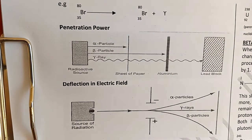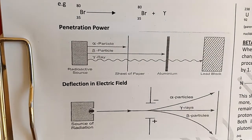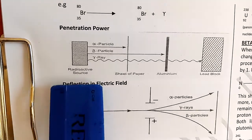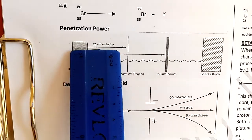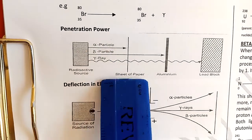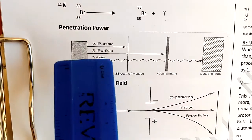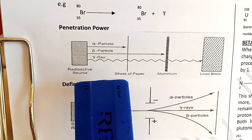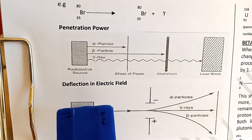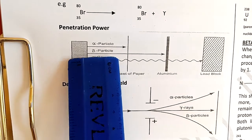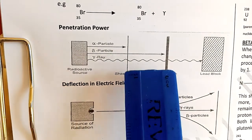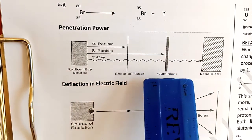The penetration power of the three particles is now shown on screen. Alpha particles have very low penetrating power and cannot pass through a piece of paper. Beta particles pass through a piece of paper but are stopped by an aluminium foil.